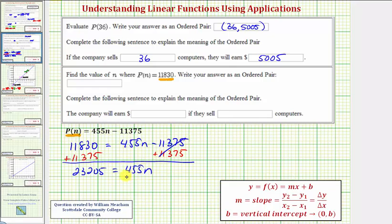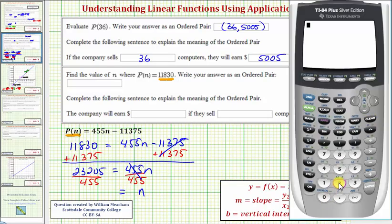So the last step to solve for n is to divide both sides by 455. Notice here on the right side we just have n, so we have n equals this quotient here. So we have 23,205 divided by 455, which is equal to 51.